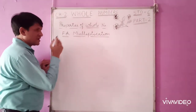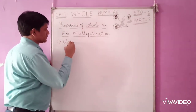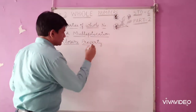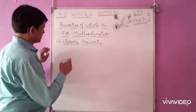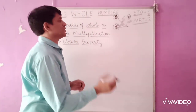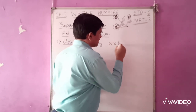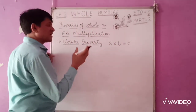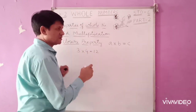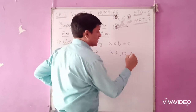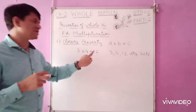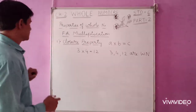Now we move on to properties of whole numbers for multiplication. The first property is closure property — same as in addition. When two whole numbers are multiplied, the answer is also a whole number. That is, a multiplied by b is equal to c, where a, b, c are whole numbers. For example, 3 multiplied by 4 is equal to 12. Three, four, and twelve are all whole numbers.